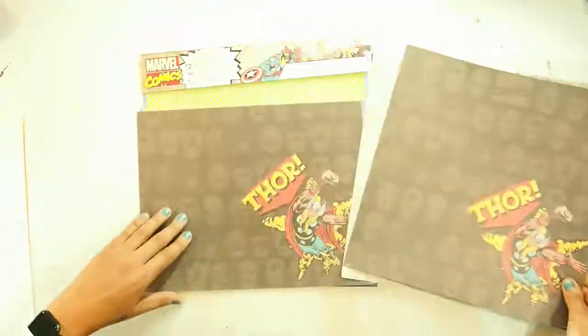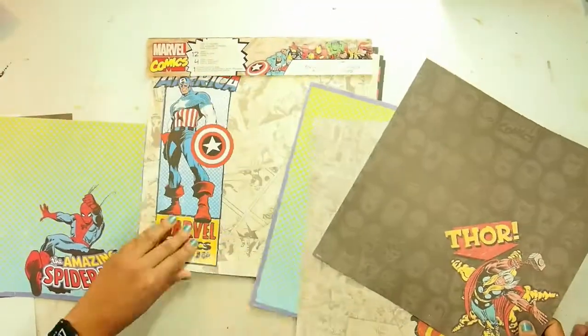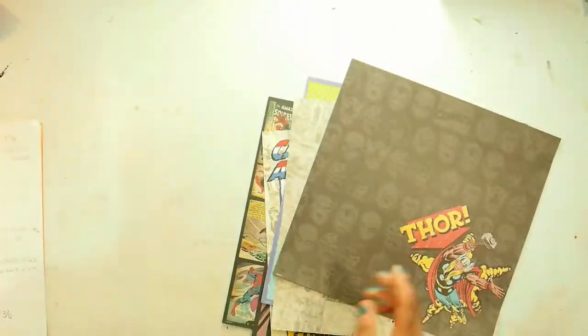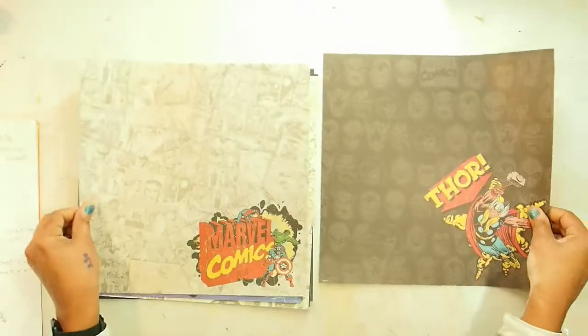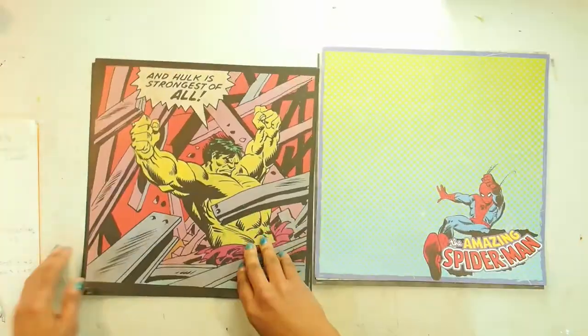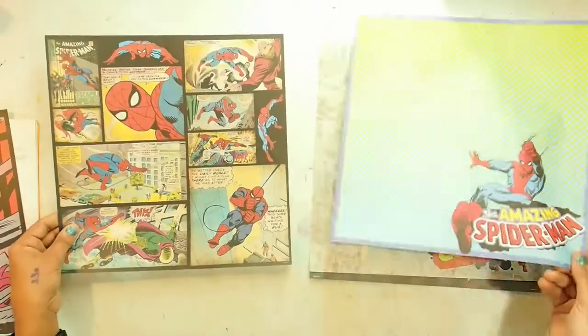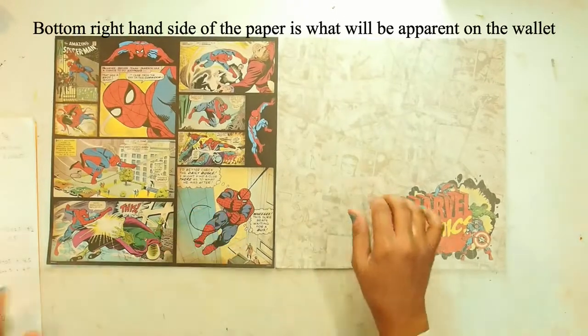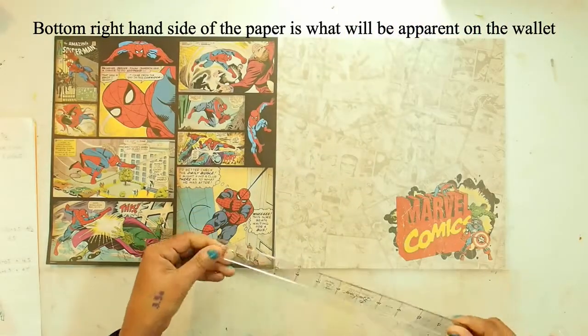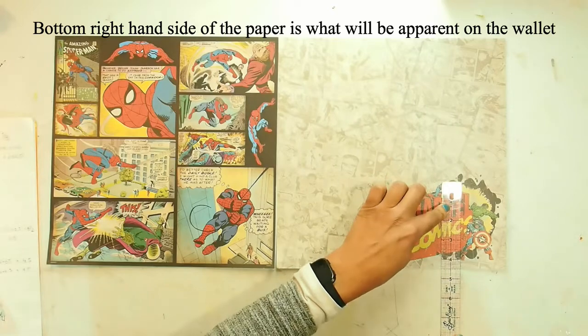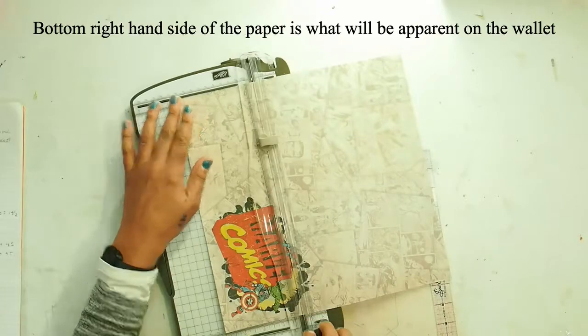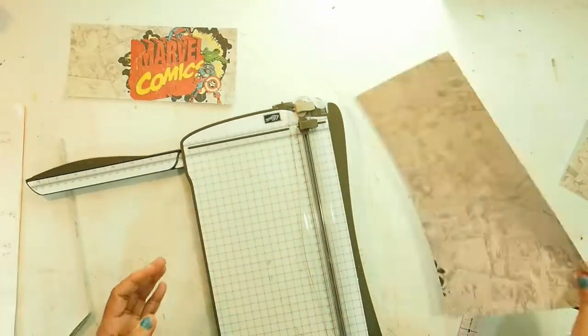I'm going to start off here by separating the sheets. You get two of each design in the pack, so I move one set to the side for another project. I'm just flicking through here and trying to decide what the outside of my wallet is going to look like. The front right-hand side is what is mainly going to show. So I go for this Marvel comic paper that shows all the superheroes and it's just the right size.